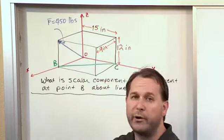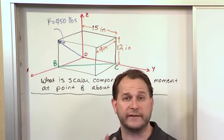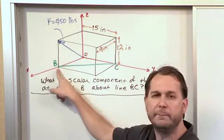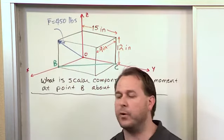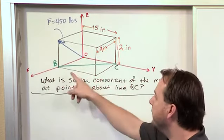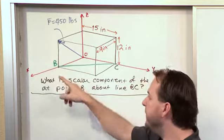So first of all, break the problem into two parts conceptually. First we can figure out what this moment is at point B very simply. That's what we've been doing in the previous lessons. What you have to do is find R and F here, and you could find the moment developed at point B.